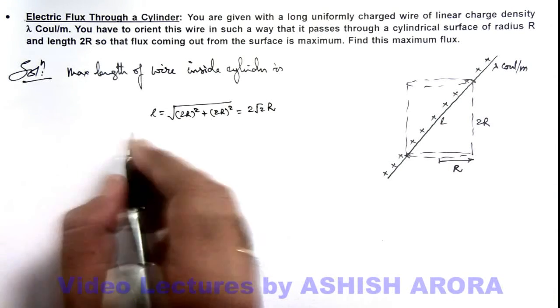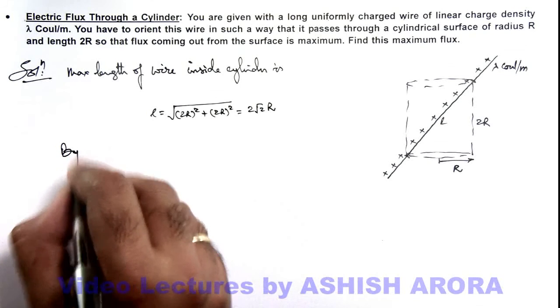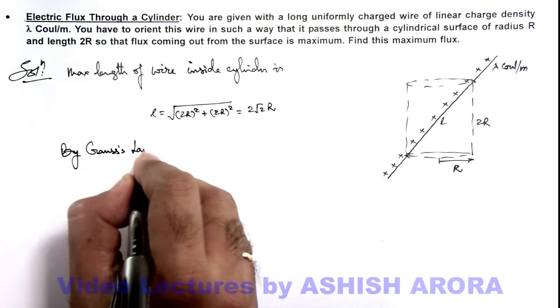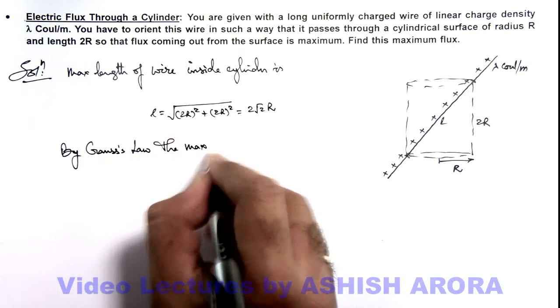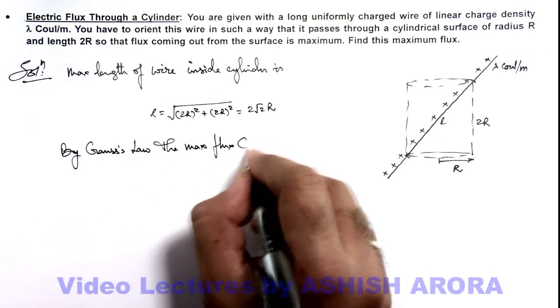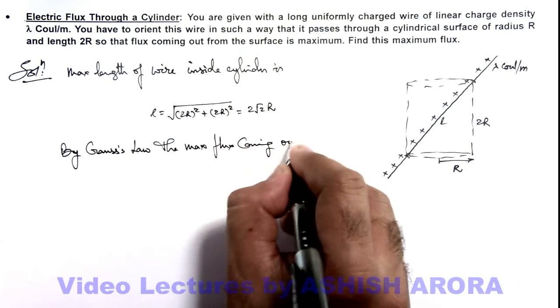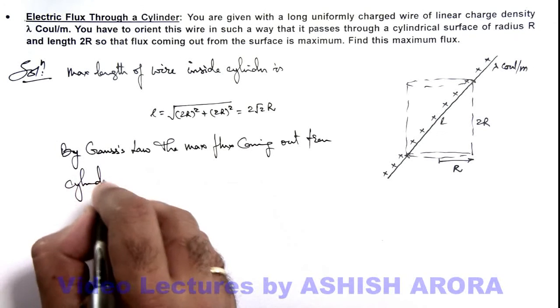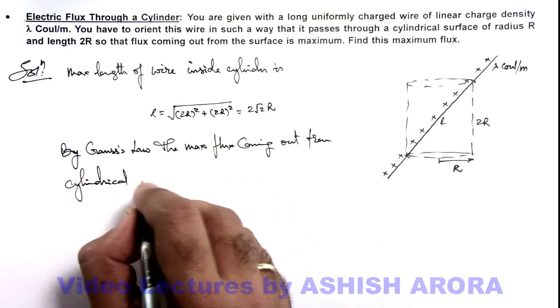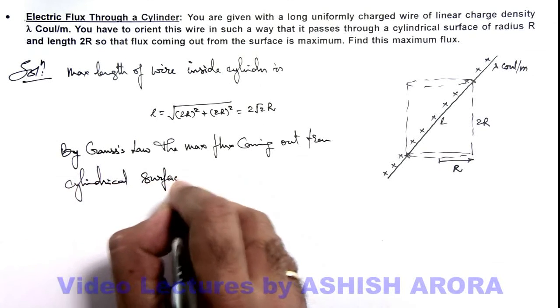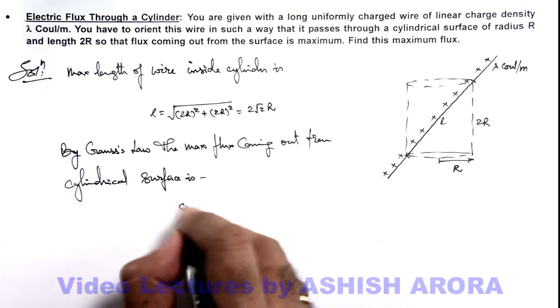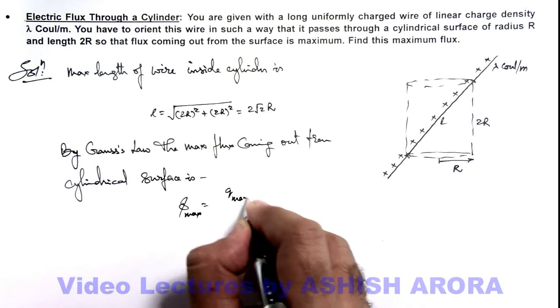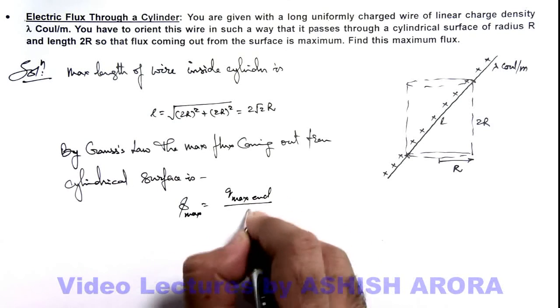So we can directly write by Gauss's law, the maximum flux coming out from cylindrical surface is, this Phi max can be written as Q max enclosed divided by epsilon not.